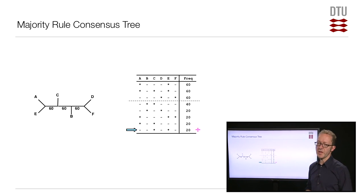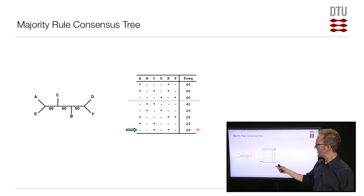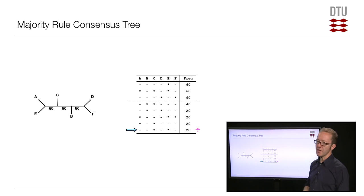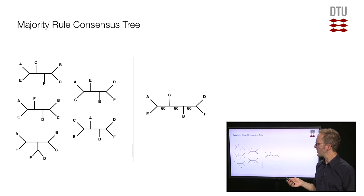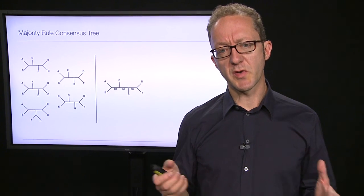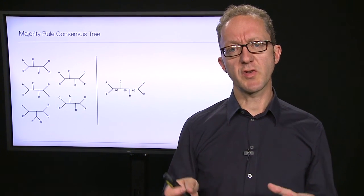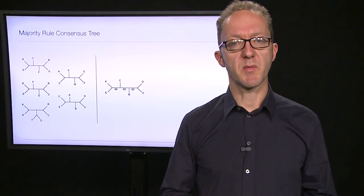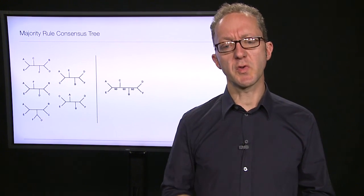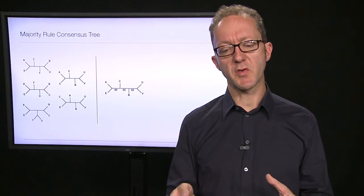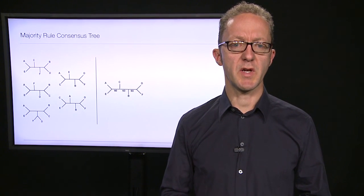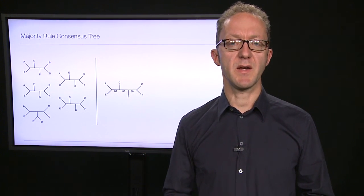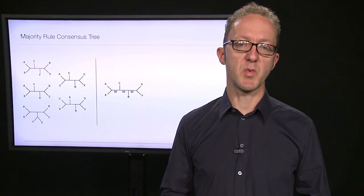The main principle of building a majority rule consensus tree is to use just the bipartitions present in more than 50% of input trees. You can see there's a simple recipe for building consensus trees, one we could implement as a computer program. Now I want you to solve the first of the weekly quizzes where you manually do exactly this — it will give you insight into how this works. Once you've done that, please come back and continue with the distance matrix based methods we'll talk about next.